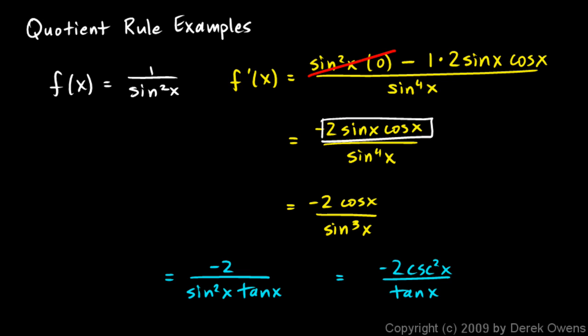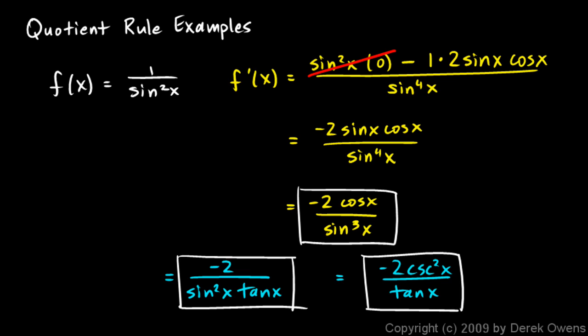Another thing that might happen is a little trig identity could get applied here. 2 sine x cosine x. You might remember that 2 sine x cosine x is the same as cosine 2x. But my point here is that there are multiple possible answers, all of which are mathematically equivalent. And if you have a multiple choice question and you get your answer, you need to be able to recognize that those are equivalent.